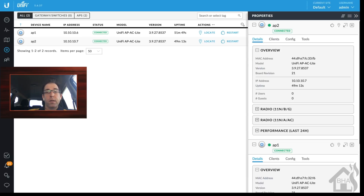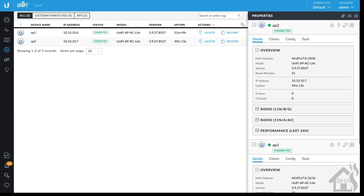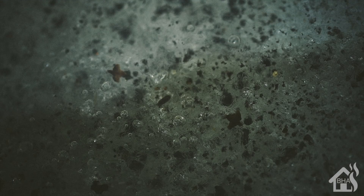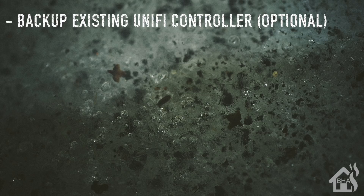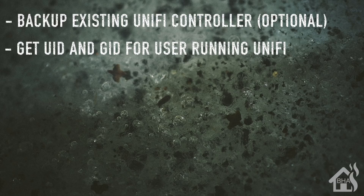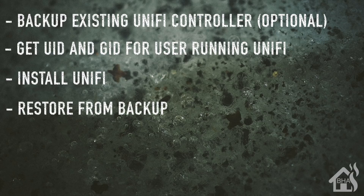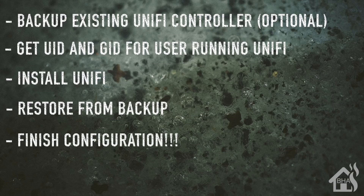Pretty easy to set up, not a whole lot was required to make that work, and we were able to transition from an old UniFi setup into a new one inside a Docker container. Quick recap of everything we covered: we backed up from our existing UniFi config — optional if you're doing a new install. Then I showed you how to get your UID and GID for the user running UniFi controller. After that, we installed UniFi in a Docker container, restored from our backup, and finished up any configuration needed to make everything work properly.